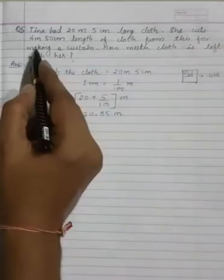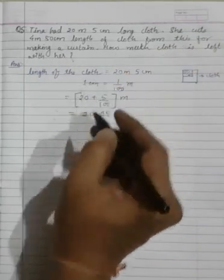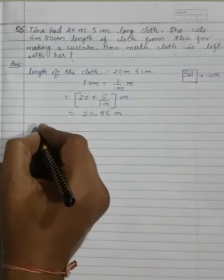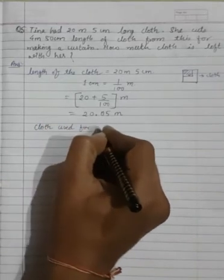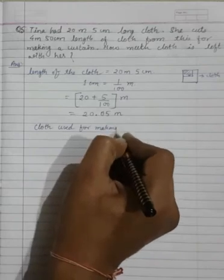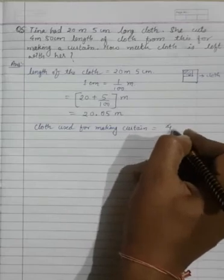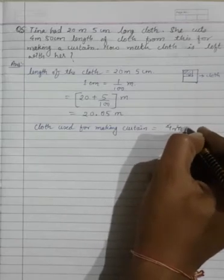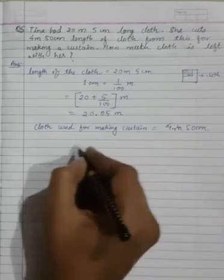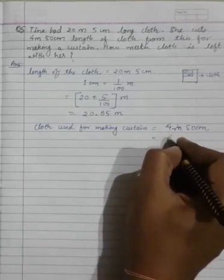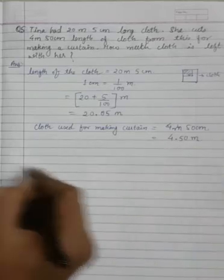Now she cut 4 meter 50 centimeter length of cloth from this for making curtain. So cloth used for making curtain. Now converting again this into meters or decimal form. This will become 4.50 meters.